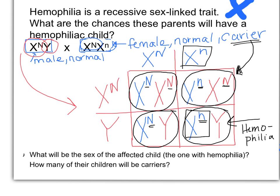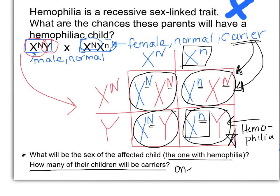So the first question: what is the sex of the affected child with hemophilia? It's the male. And how many of the kids will be carriers? If a kid has hemophilia, they are not a carrier. So only the one girl is the carrier — we only have one, and the gender will be female. Males cannot be carriers in this case because they're going to have hemophilia, which means they can't be a carrier.